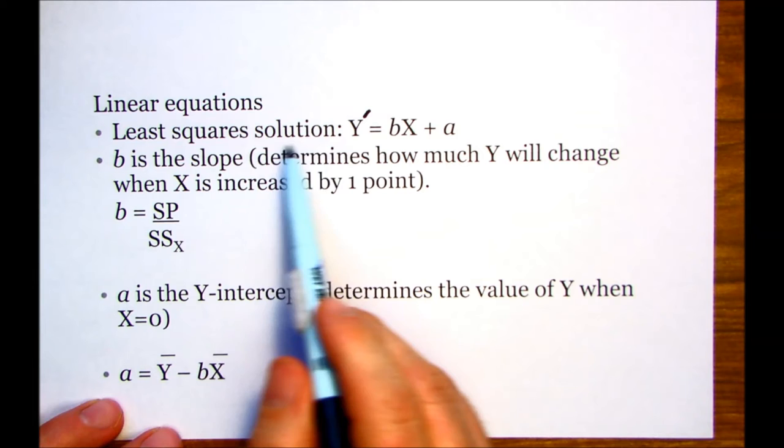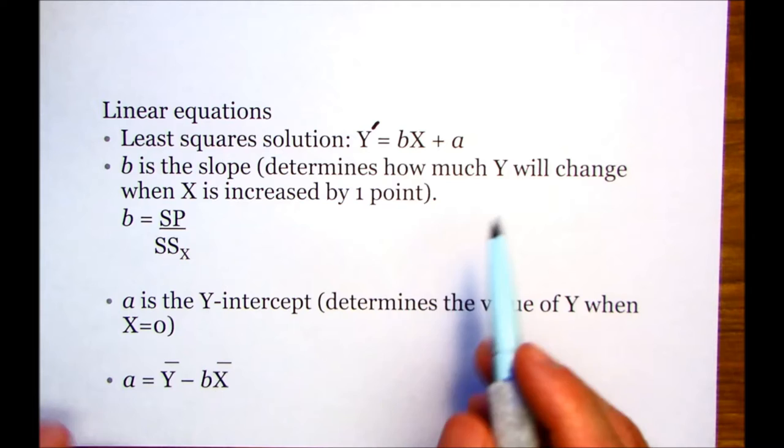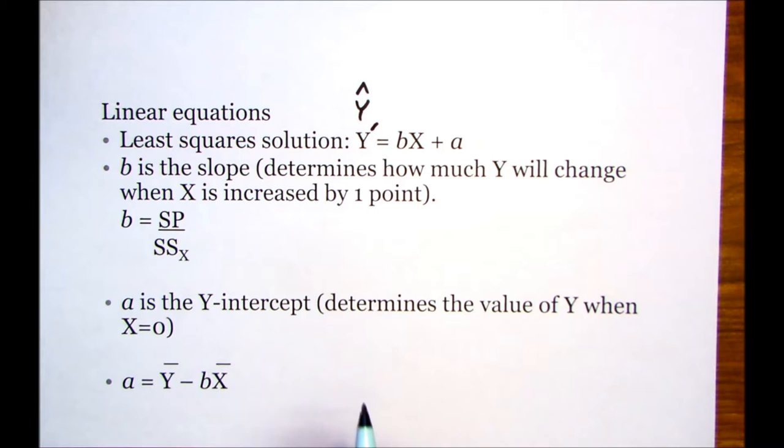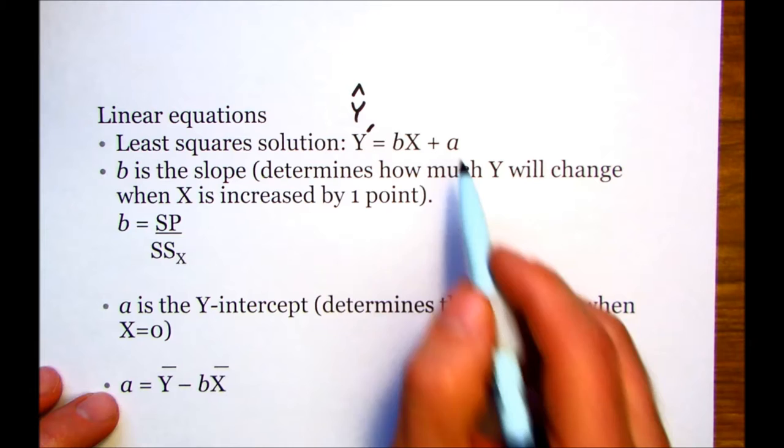A reminder of our least square solutions. What we're trying to get is the predicted y, labeled y prime, or sometimes this is y hat as well. All it is is the predicted y variable. And so, we're going to have the slope times x plus the y-intercept.